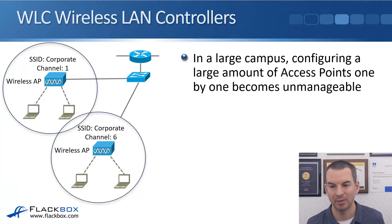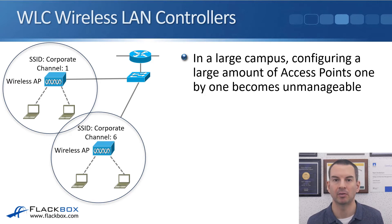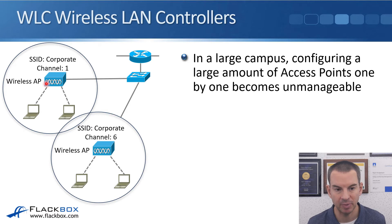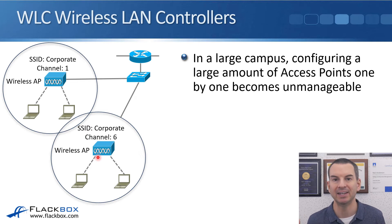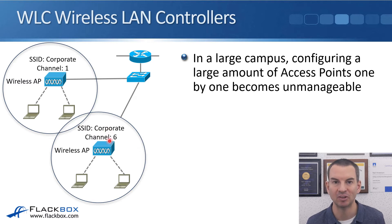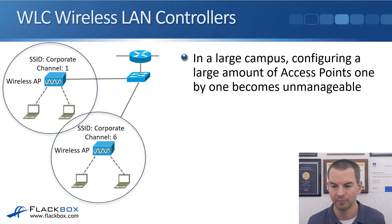In this lecture, you'll learn about wireless LAN controllers and the CAPWAP protocol. In a large campus, configuring a large amount of wireless access points individually quickly becomes unmanageable. You can see in the example campus here, I've got my first wireless AP configured with the corporate WLAN and its settings, and I've set up the same configuration on the second wireless AP. That would be fine if I only had a couple of access points, but what if I had 200? Configuring them all separately would just be unmanageable.